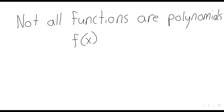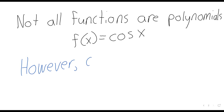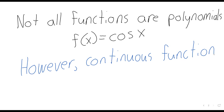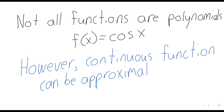For example, f(x) equals the cosine of x. That is a trig function; it is not a polynomial. However, continuous functions can be approximated with polynomials.